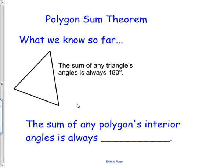So far we know that a triangle, the angles of a triangle always add up to 180. That's something we've learned so far. So today our goal is, let's look at the shapes that are not triangles - maybe a quadrilateral, pentagon, stuff like that. What do those shapes' interior angles always add up to? So the sum of any polygon's interior angles is always... and we're going to figure this out today.